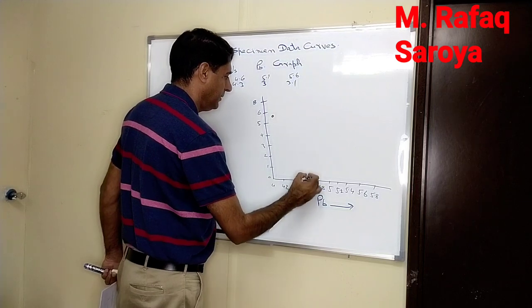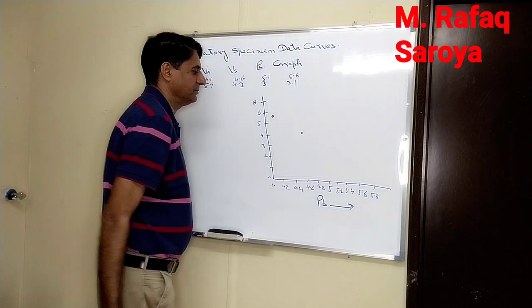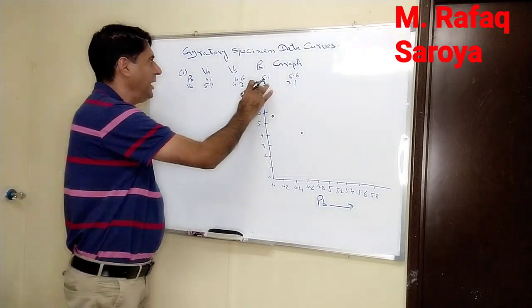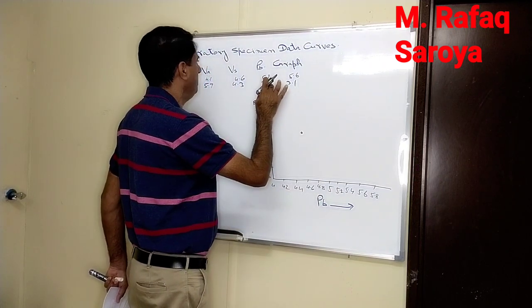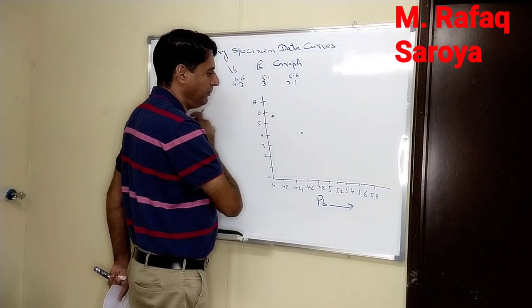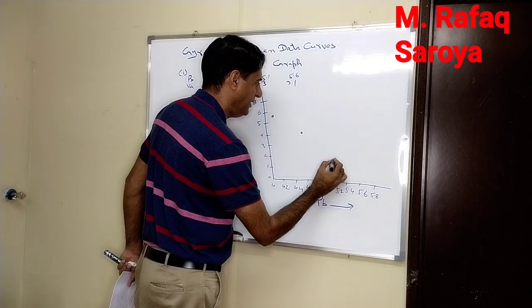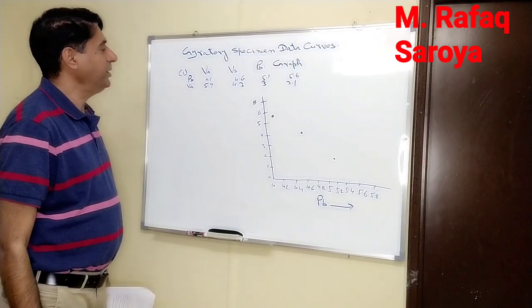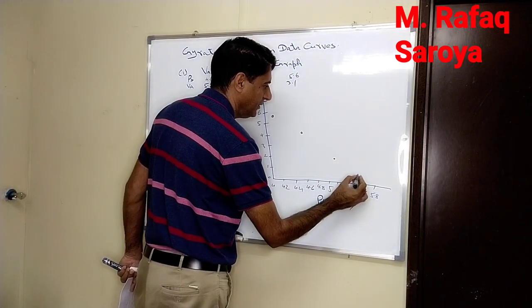When binder content is 5.1, air void is 4.3, so I am nearly at this point. For binder content 5.6, air void is 2.1, positioned like this.